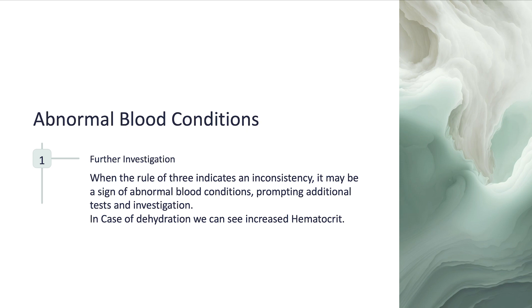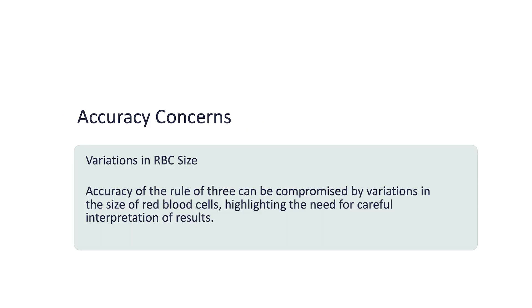Abnormal Blood Conditions: When the Rule of Three indicates an inconsistency, it may be a sign of abnormal blood conditions, prompting additional tests and investigation. In case of dehydration, we can see increased hematocrit. Variations in RBC size can compromise the accuracy of the Rule of Three, highlighting the need for careful interpretation of results.